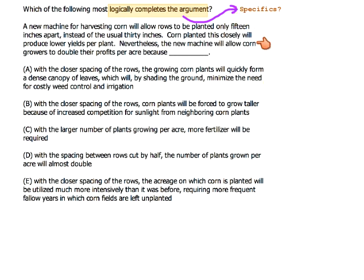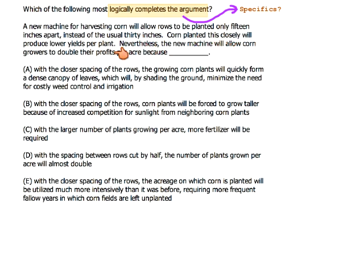Let's talk about specifics. The goal of reading this passage is to know what they want. We can plant corn at half the usual spacing — there's not as much yield per plant, but profits can double.